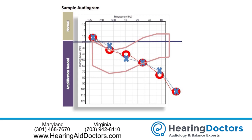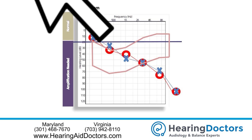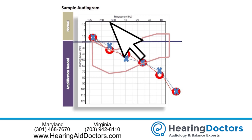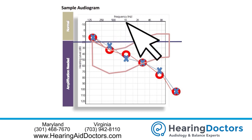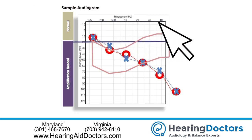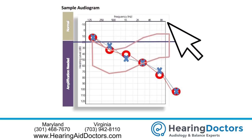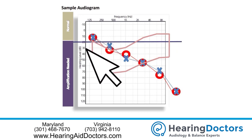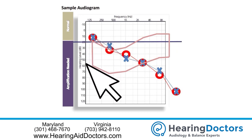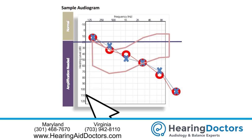It also shows the percentage of normal conversational speech that you're still able to hear. Across the top you'll find the frequency or pitch of sound in Hertz from low pitch bass tones to high pitch treble tones. On the vertical plane you'll have the intensity or loudness of the sound measured in decibels from soft to loud.